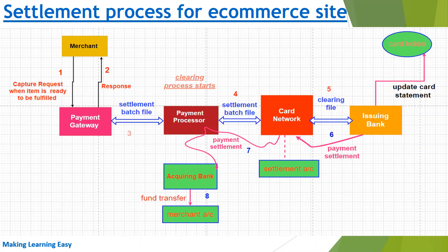In the clearing process, all calculations happen — such as how much the issuing bank needs to transfer, and how much to deduct as transaction fees. Every party has its own transaction processing fee: the issuing bank, the card network, and the payment processor all have fees, and all these calculations happen in the clearing process. Once the clearing process is completed, the card network sends the clearing file to the issuing bank. This clearing file, step number five, contains how much the issuing bank needs to transfer the funds. After the issuing bank receives the clearing file, it sends the payment amount to the settlement account of the card network.